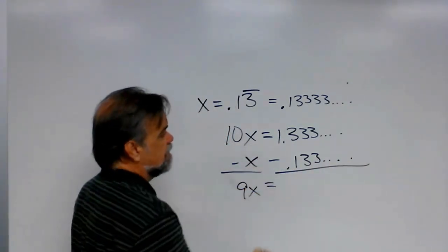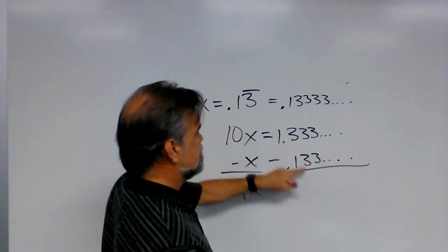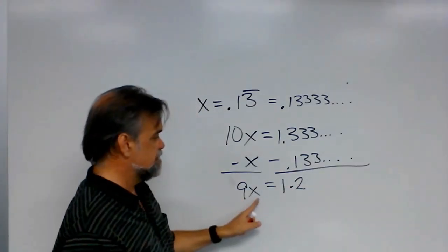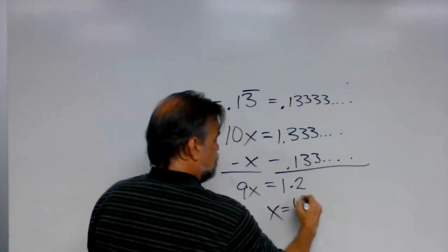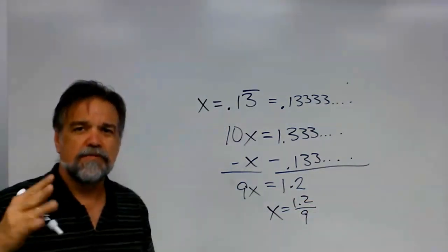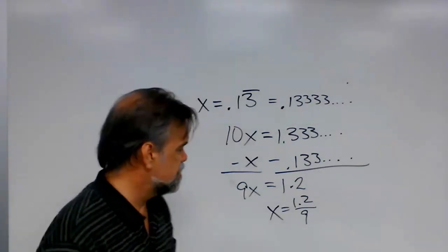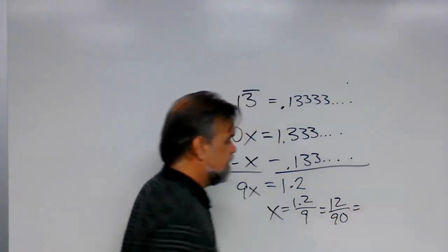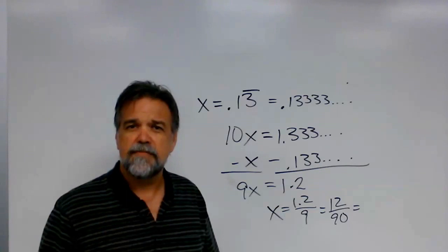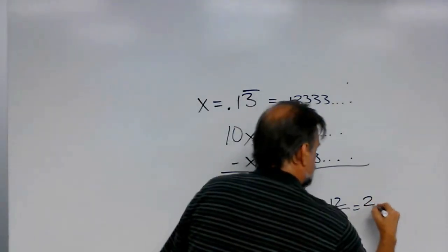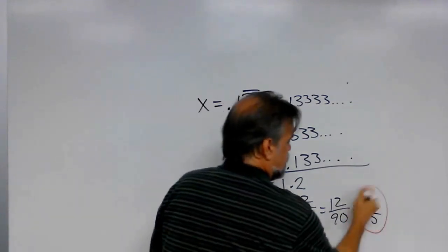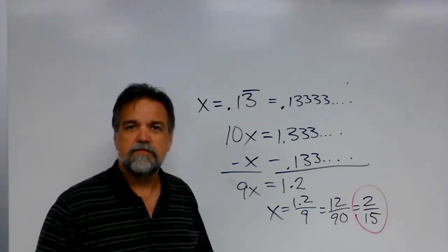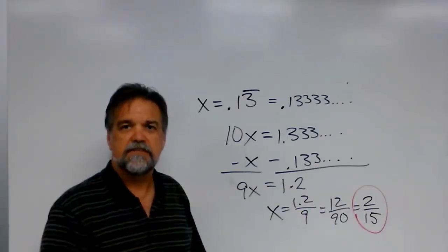10x minus x, 9x. 3 minus 3 cancels out. 3 minus 3 cancels out. 3 minus 1 is 2, and 1 minus 0 is 1. And so, what do I get? I get 9 times x equals 1.2. So, x equals 1.2 over 9. Now, whenever I have a decimal and a fraction, I don't like that very much. So, let me multiply both numerator and denominator times 10, and I get 12 over 90. And 12 and 90, I believe those are both divisible by 6. And so, I can call that 2 over 15. And sure enough, that's exactly what the fraction is. 0.13 bar equals 2 fifteenths. Go ahead and divide 15 into 2, and you'll see it does equal 0.13 bar.